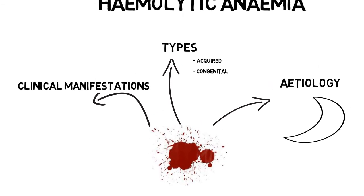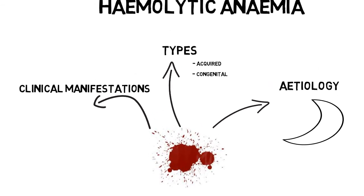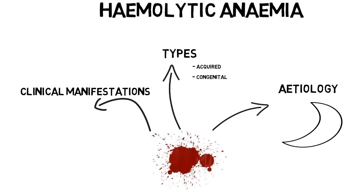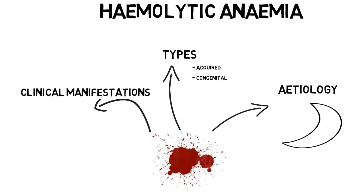With erythropoiesis, it's really ineffective, which causes the red blood cells to become small — thus microcytic — and dull coloured, which is hypochromic. Further, the ineffective erythropoiesis causes an increase in erythropoiesis, which can lead to bone deformities — such as to the face or skull — and an increased likelihood of bone fractures.